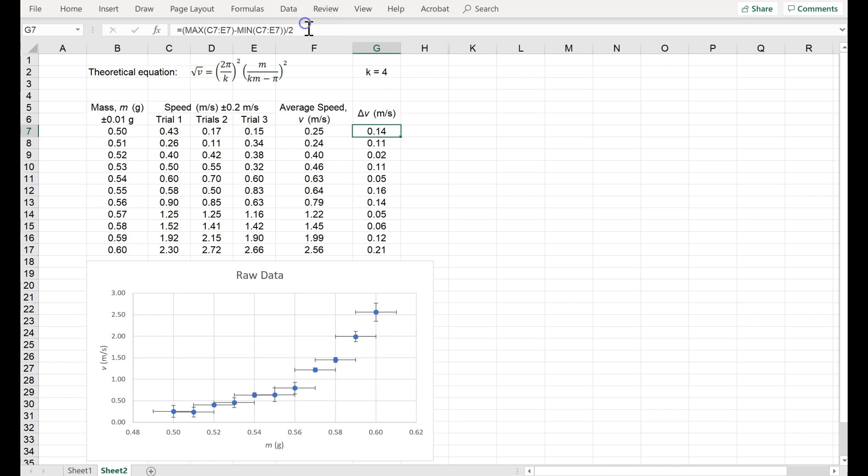Here are my masses. I did three repeated trials at each mass, and then I averaged the three speeds together. And then here, for the uncertainty, I've got the maximum of the three minus the minimum of the three divided by two. That's, of course, my y axis uncertainty, and so the speed is my y axis, here it is, and then my x axis uncertainty is just this value, plus or minus 0.01 grams.